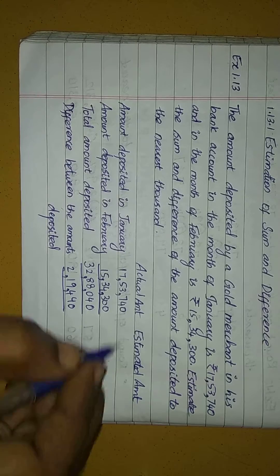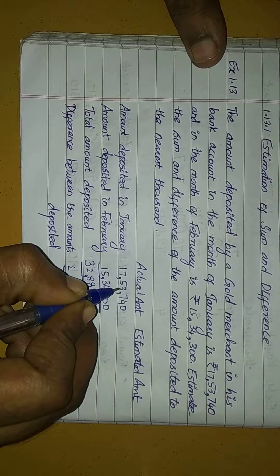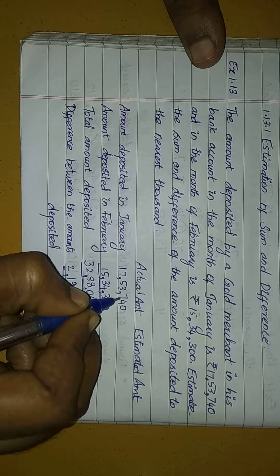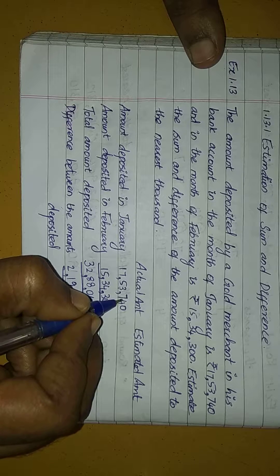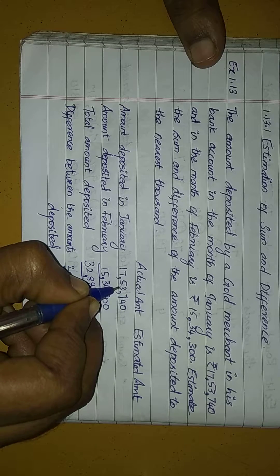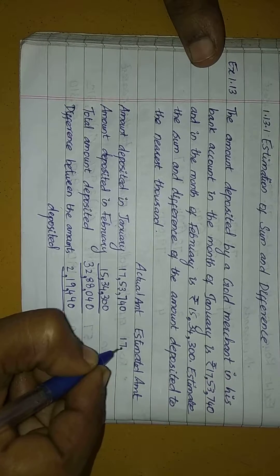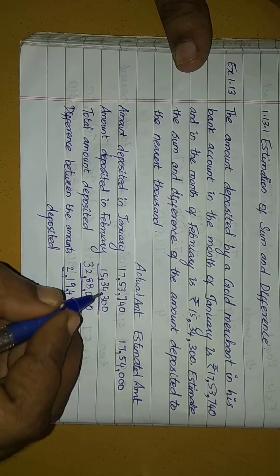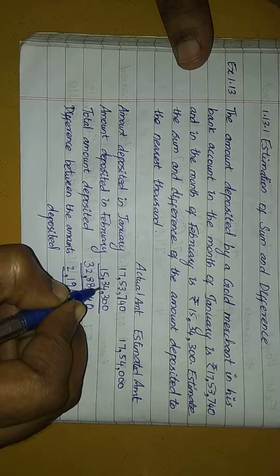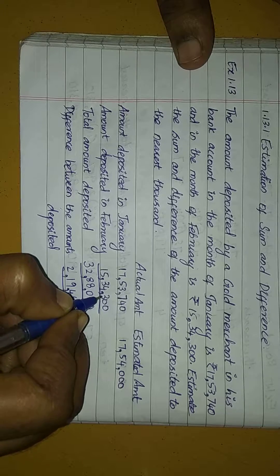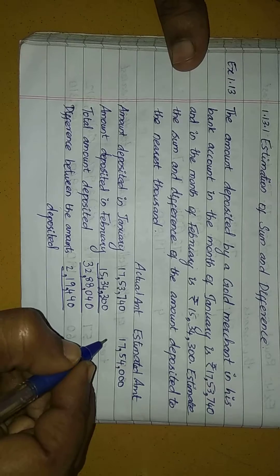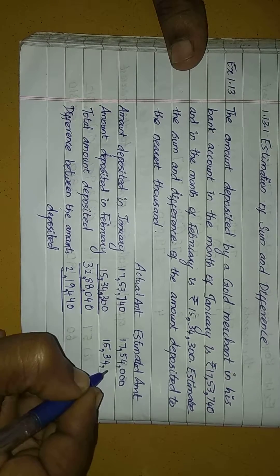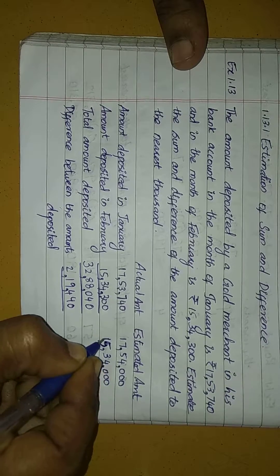Now for estimation, we look at the thousands place. For 17,53,740 — the thousands digit is 3, so we round to 17,54,000. For 15,34,300 — the thousands digit is 4, so we round to 15,34,000. Now add these estimated values.